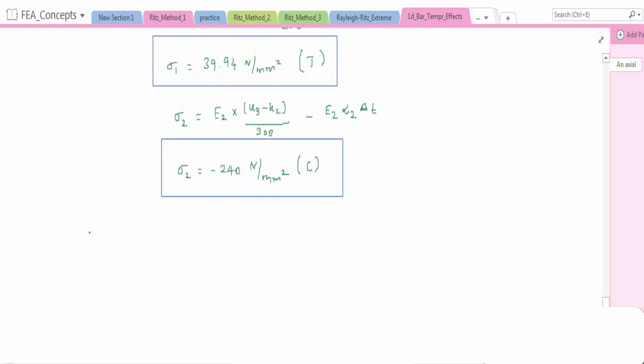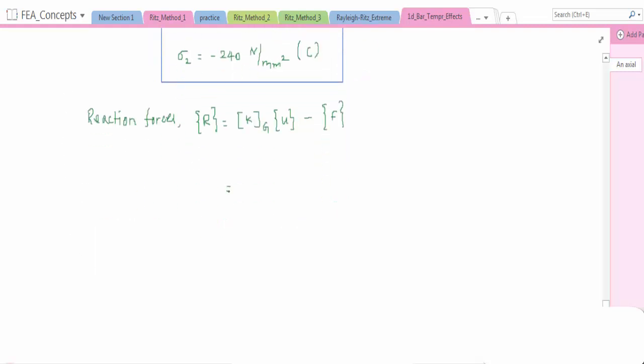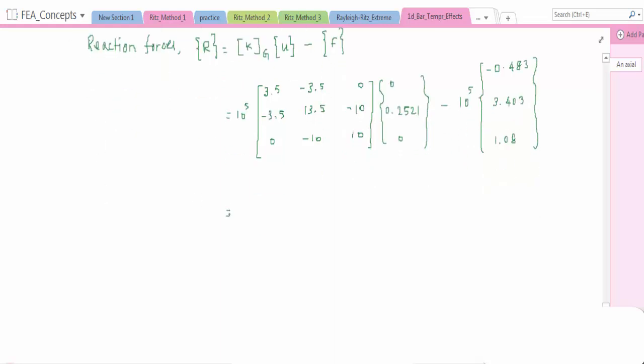Let us go with reaction forces. We know the formula R equal to KG U - F. We know the stiffness matrix and U matrix and force vector. We can now simplify all these. The reaction forces we will get 10^5 [-0.3993; 0; -3.601] Newton.